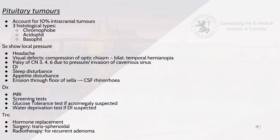Symptoms of pituitary tumours include headaches, visual defects such as compression of the optic chiasm causing bilateral temporal hemianopia, palsy of cranial nerves 3, 4 and 6 due to pressure or invasion of the cavernous sinus, diabetes insipidus, sleep and appetite disturbances, and erosion through the floor of the sella turcica leading to CSF rhinorrhea. Diagnosis can be via MRI, screening tests, glucose tolerance tests if acromegaly is suspected, or the water deprivation test if DI is suspected. Treatment is hormone replacement, radiotherapy for recurrent adenomas, and surgery — usually transsphenoidal unless there's a suprasellar extension, in which case a transfrontal approach is used.